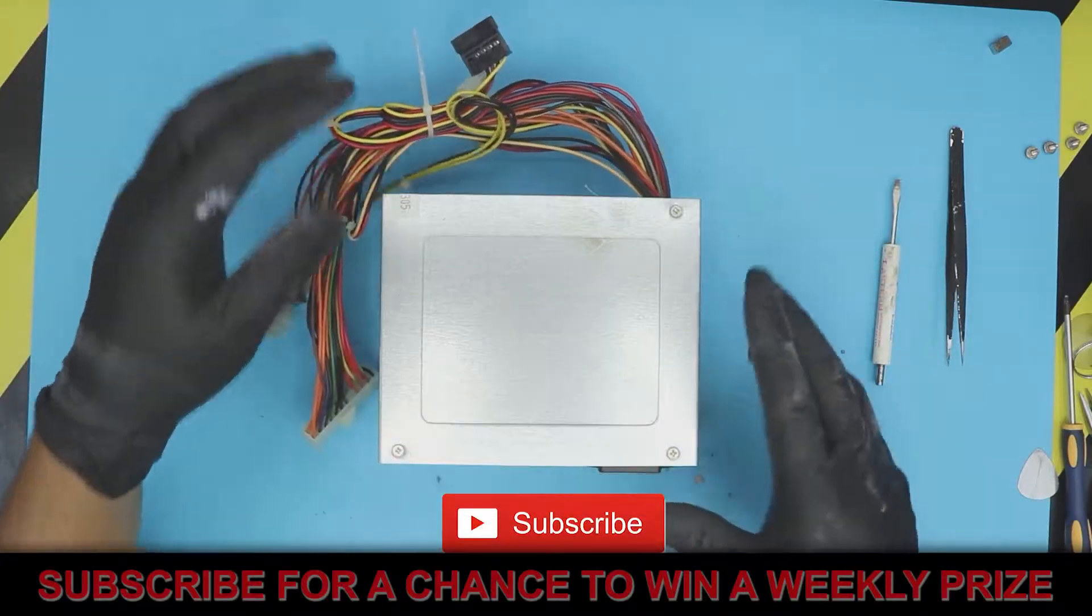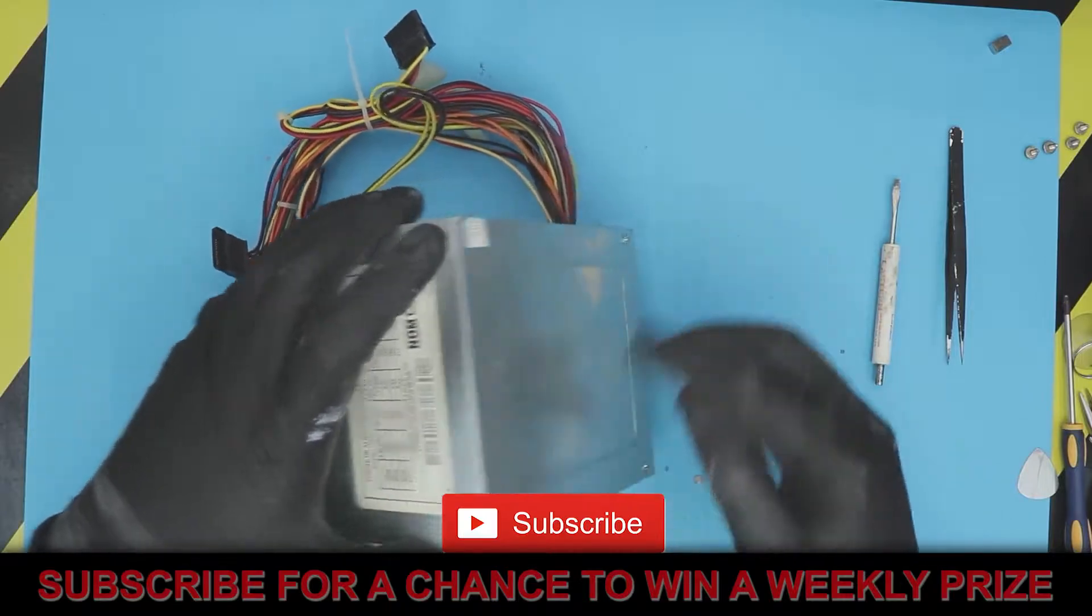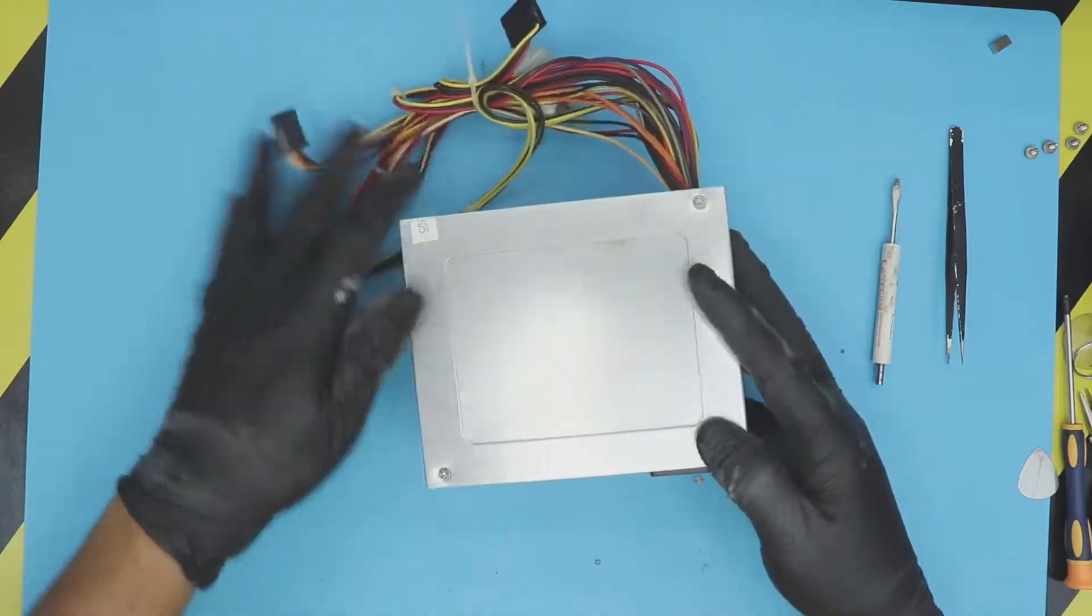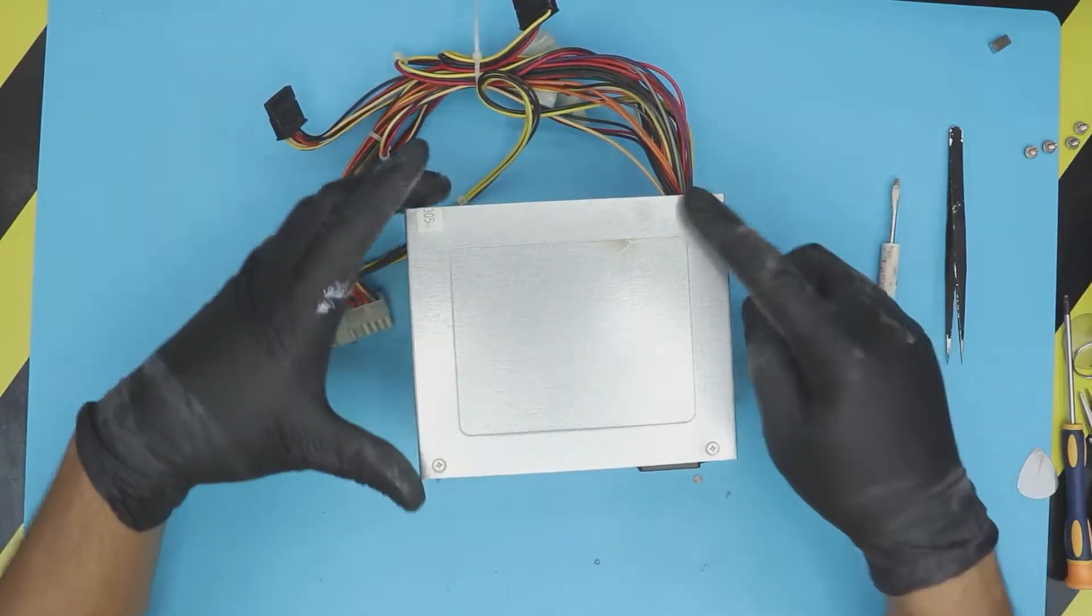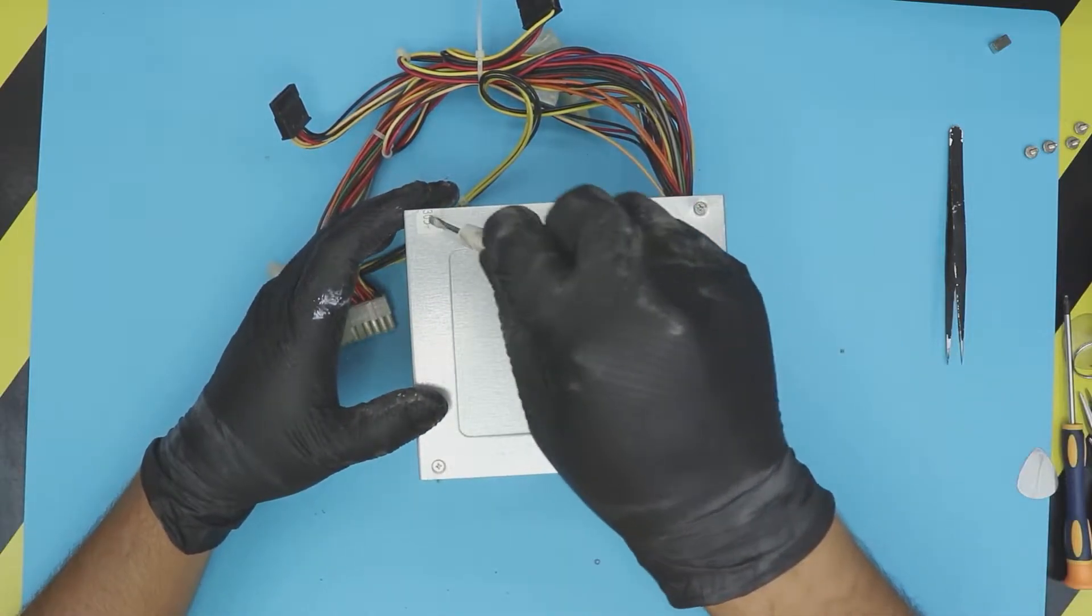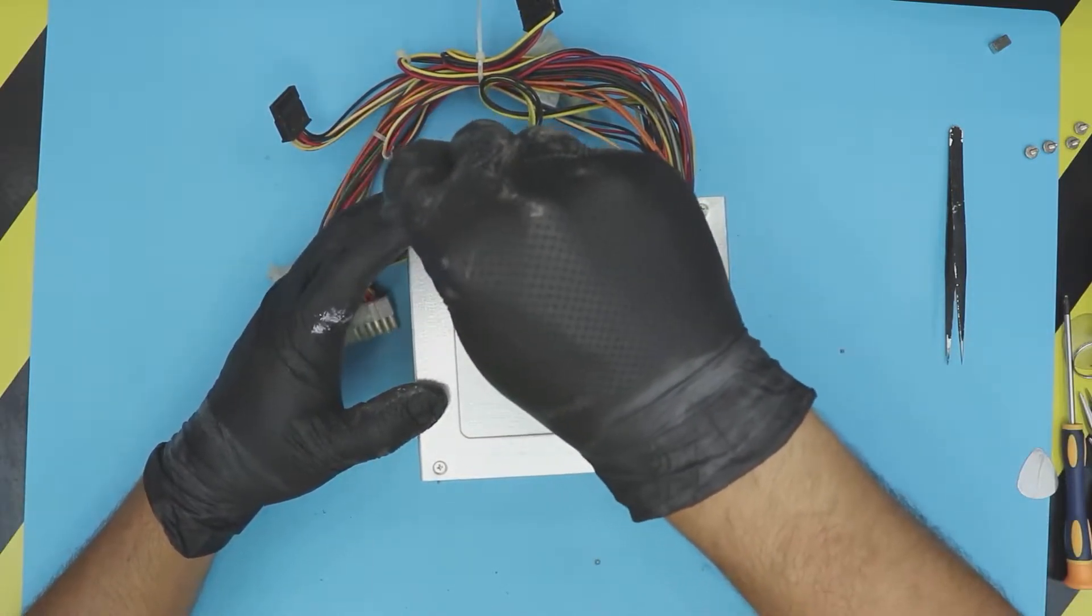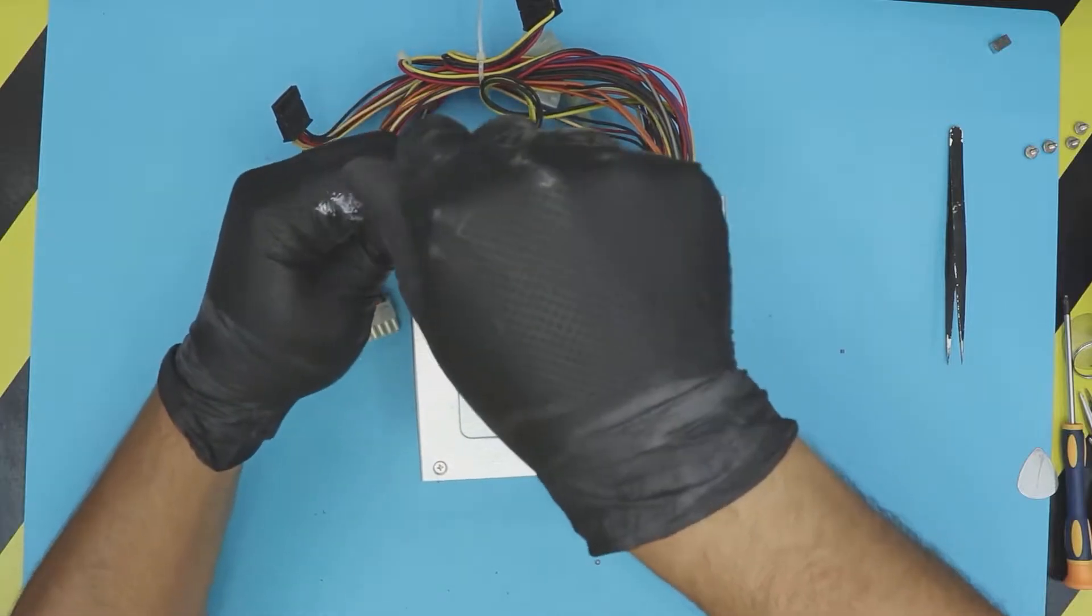To open it up, normally at the bottom or on the sides there are four screws. You want to find these four screws. One is under the warranty sticker, so we want to remove these four screws.